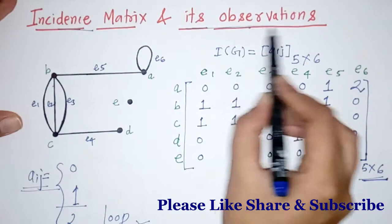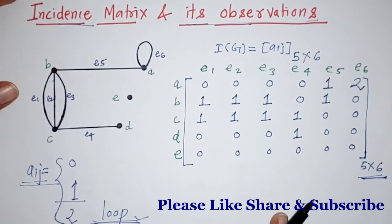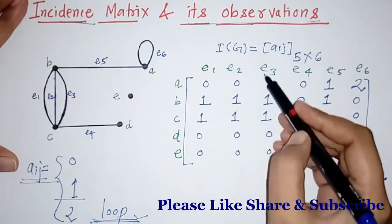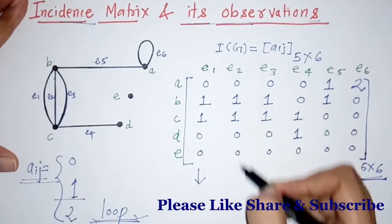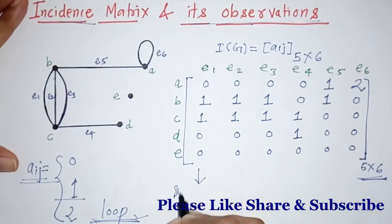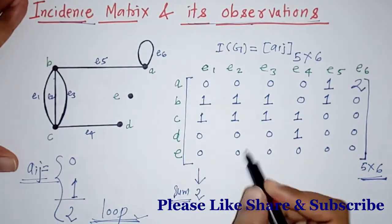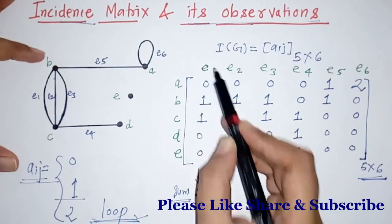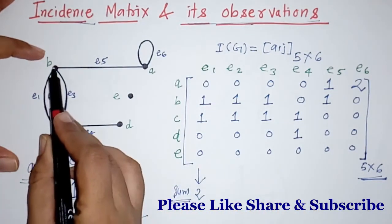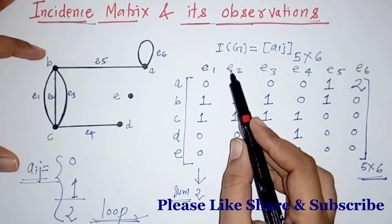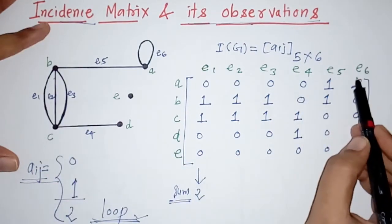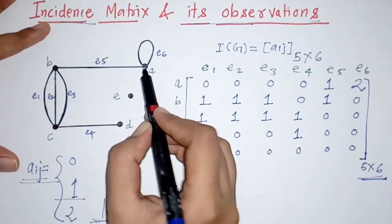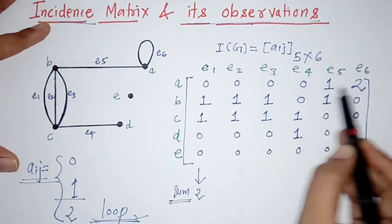Now we check observations from this matrix. The first observation is that the sum of any column is 2. For example, edge E1 is incident with two vertices B and C. Similarly, edge E2 is incident with two vertices. For edge E6, which is a self-loop, the starting and ending point is the same vertex, so we write 2 — hence the column sum is still 2.